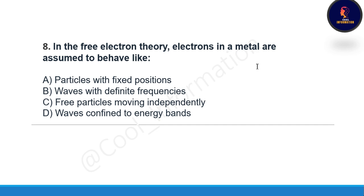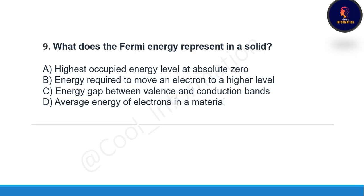Next question: in the free electron theory, electrons in a metal are assumed to behave like — option A: particles with fixed positions, option B: waves with definite frequencies, option C: free particles moving independently, option D: waves confined to energy bands? Correct option is C, free particles moving independently. Next question: what does the Fermi energy represent in a solid — option A: highest occupied energy level at absolute zero, option B: energy required to move an electron to a higher level, option C: energy gap between valence and conduction band, option D: average energy of electrons? Correct option is A, highest occupied energy level at absolute zero.